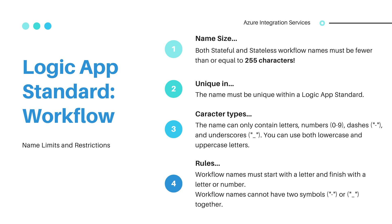The name can contain dashes and underscores. You can use both lowercase and uppercase letters. Workflow names must start with a letter and finish with a letter or number. Workflow names cannot have two symbols — dashes or underscores — together.